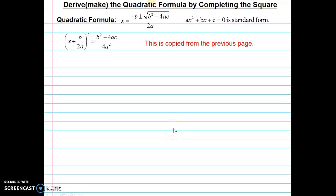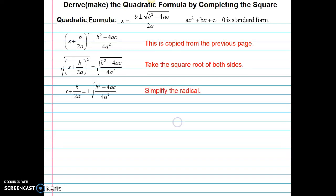So the next step in the complete the square process is to take the square root of both sides. And after I take the square root, I'm going to simplify that radical. So I've got x plus b over 2a equals plus or minus, don't forget there's a positive or a negative root, square root of b squared minus 4ac over 4a squared. Now next I'm going to take the square root of 4a squared because that denominator is a perfect square. So the square root of 4a squared is 2a.